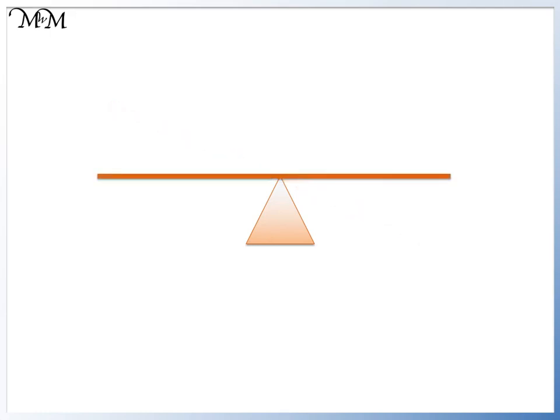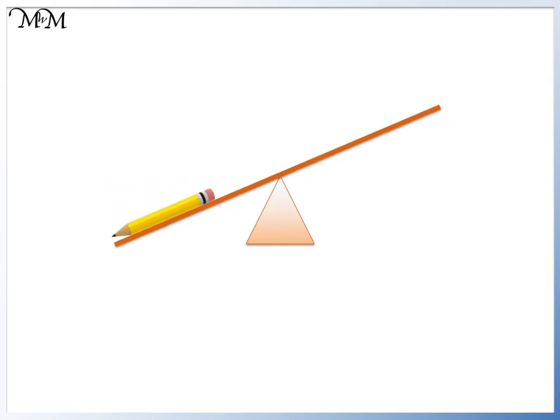On these scales we will put a pencil on one side. The pencil is at one end but there is nothing at the other end. The pencil is heavier than nothing and so the side with the pencil moves downward.